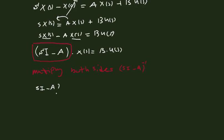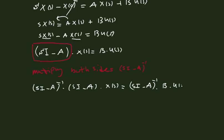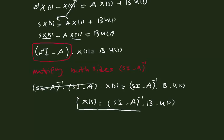Multiplying both sides by (sI minus A) to the power of minus one, we get: X(s) equal to (sI minus A)^(-1) · B · U(s). This is equation one.